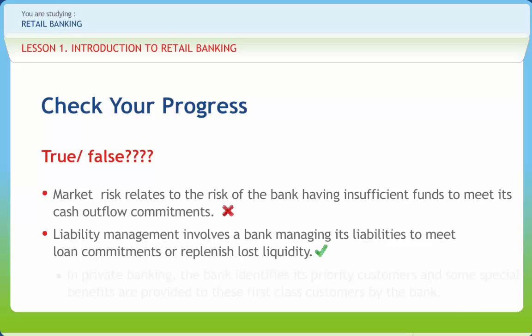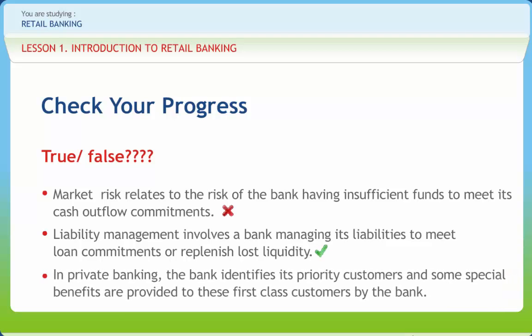Statement: In private banking, the bank identifies its priority customers and some special benefits are provided to these first-class customers by the bank. Right or wrong? Wrong.